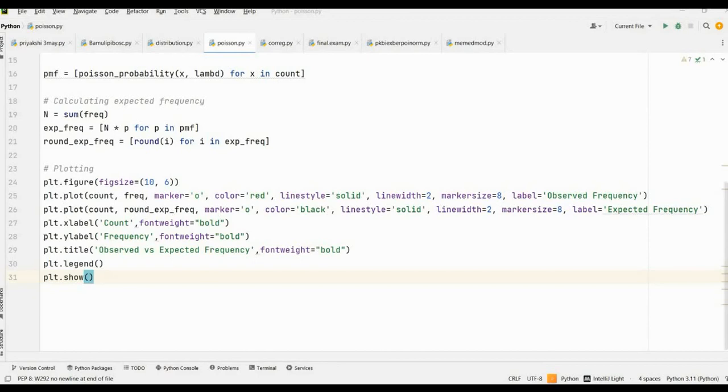Next, for the x-label and y-label, we take them as count and frequency. After that, we give the title as observed versus expected frequency. And lastly, we type plt.legend and plt.show for showing the graph.